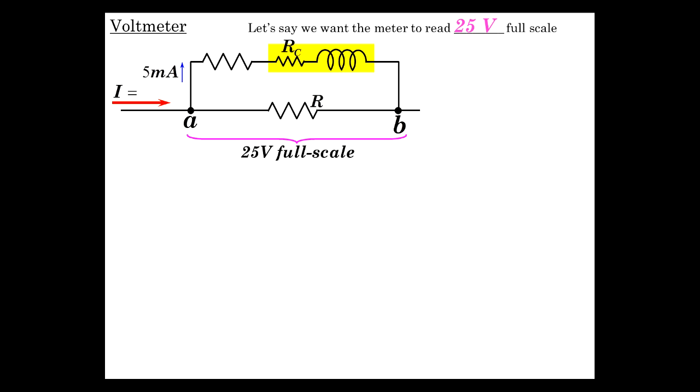As before, five milliamps causes full scale deflection. So we're going to have a current going through a circuit component and we're going to place this across that component and measure the result, measure the voltage. Okay, well the circuit element, it could be anything, doesn't really matter what it is.